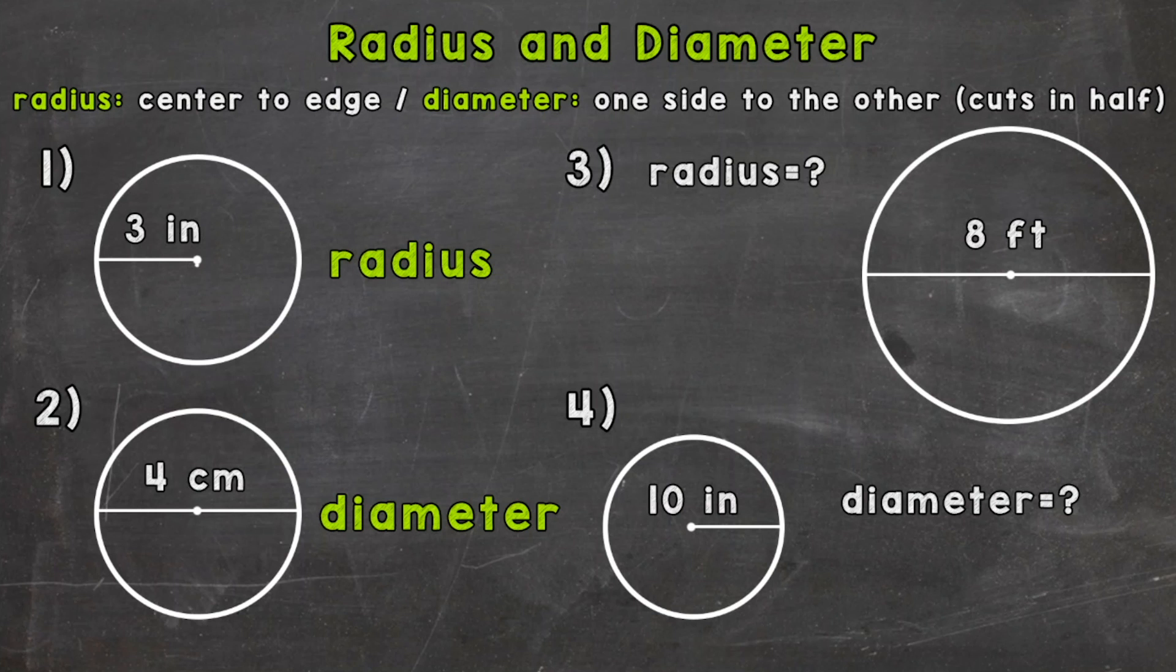It can be marked from the center point, and we can go down here—that's going to be three inches as well. So as long as you go from the center point to the edge, your radius will be three inches. And again, the radius is the distance from the center of the circle to the edge.